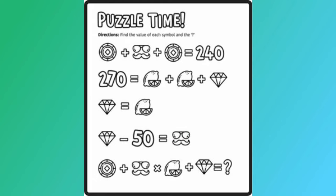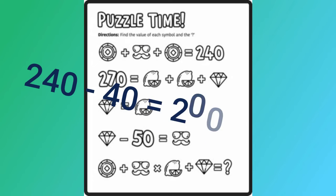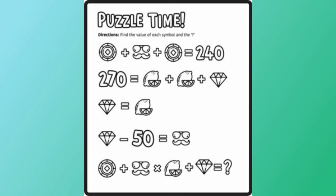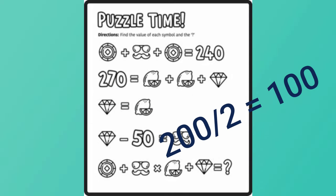So now I go back to the top line. I see that poker chip plus disguise plus poker chip equals 240. If I take 200 and divide it by 2 because of the two poker chips, that leaves me with a poker chip equals 100.